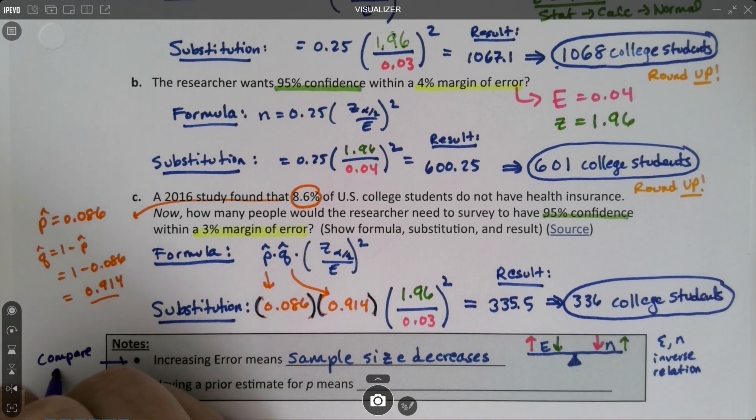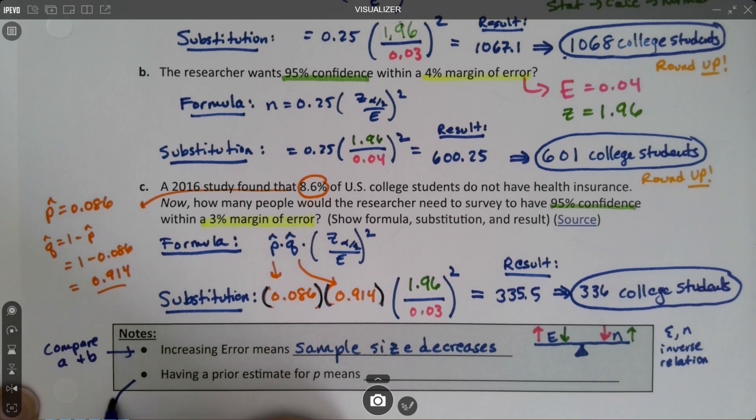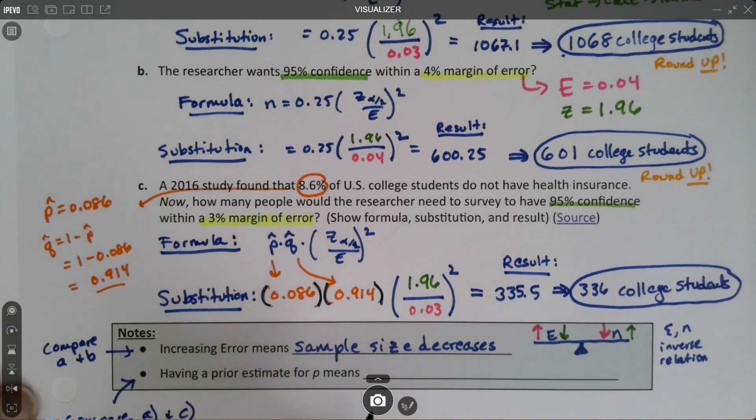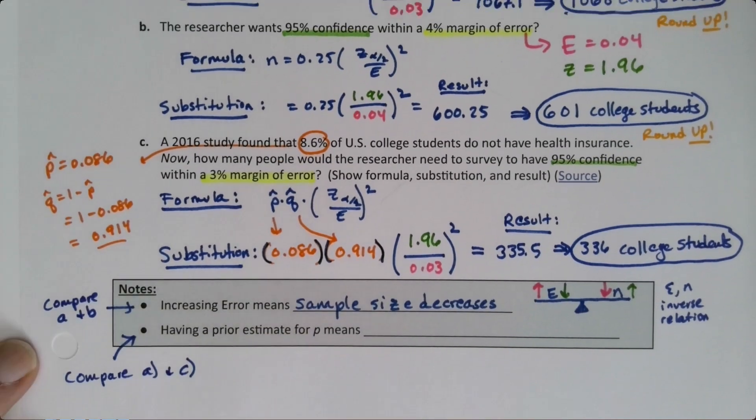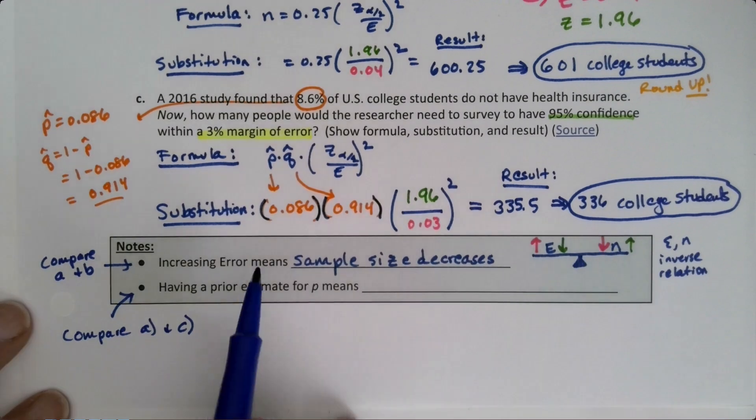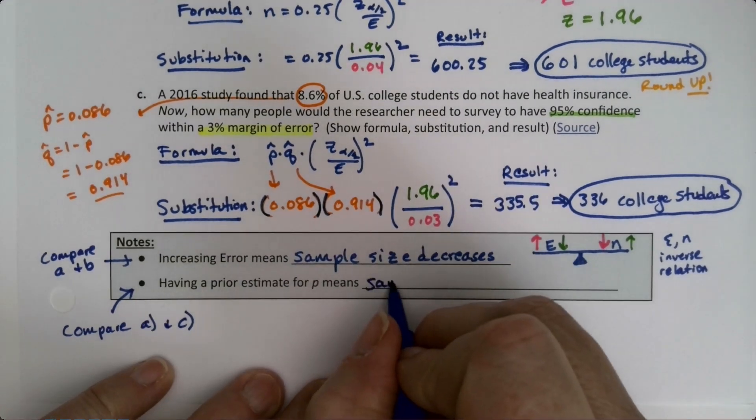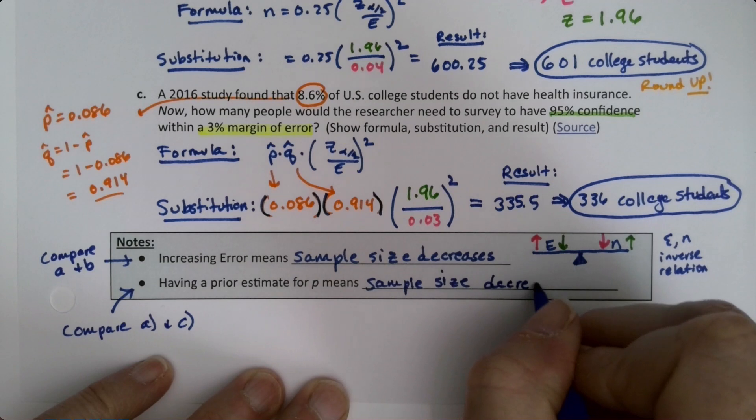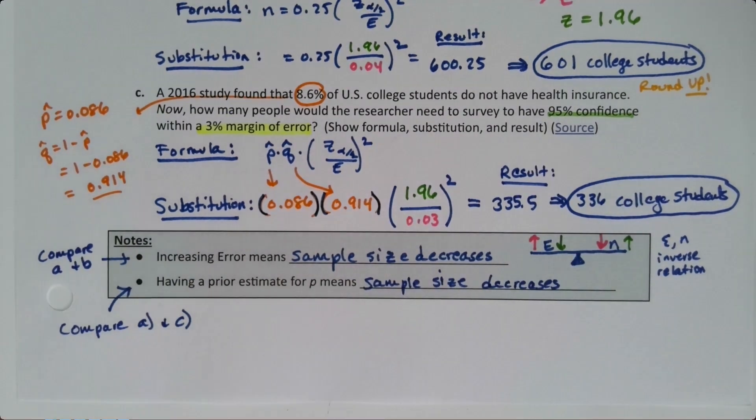Now let's compare a with c. Part a - when we had no prior estimate, we needed 1068 college students. But when we have a prior estimate, we only need 336. So having a prior estimate means the sample size decreases. Having a clue as to where p is means you need a smaller sample to verify.